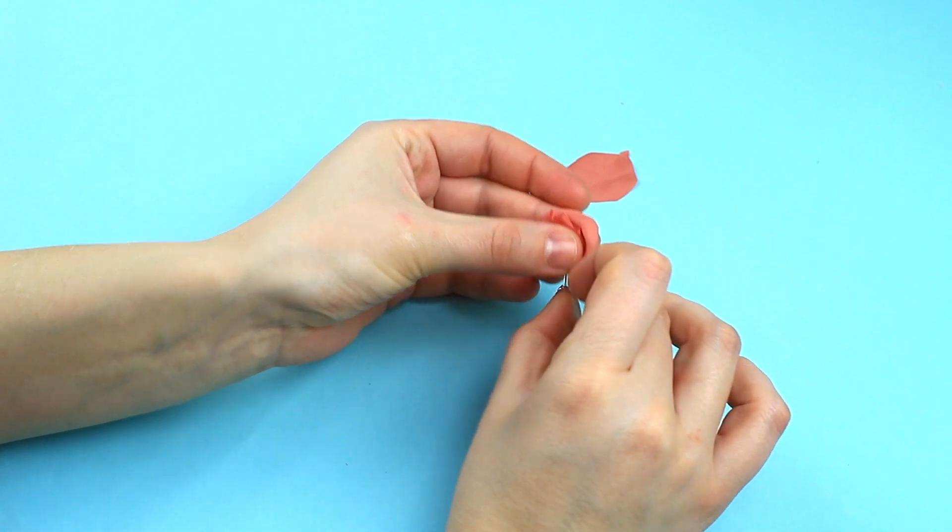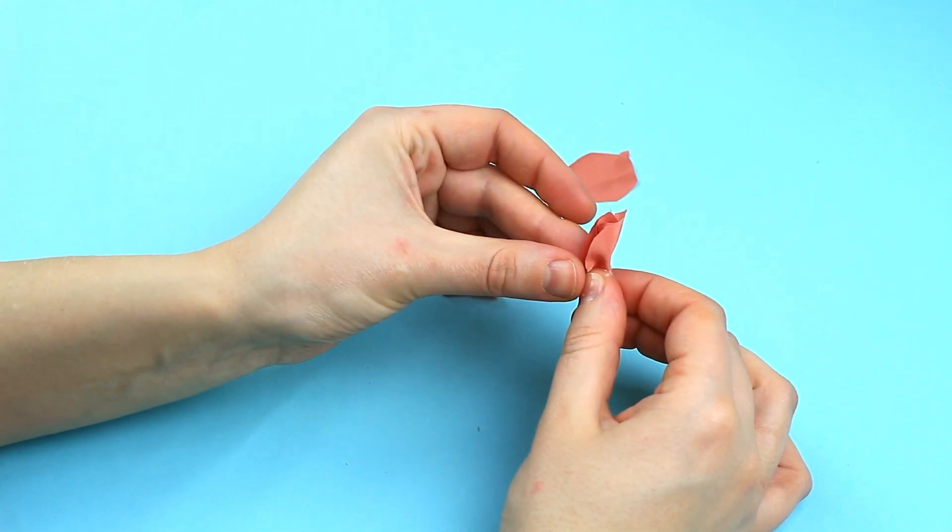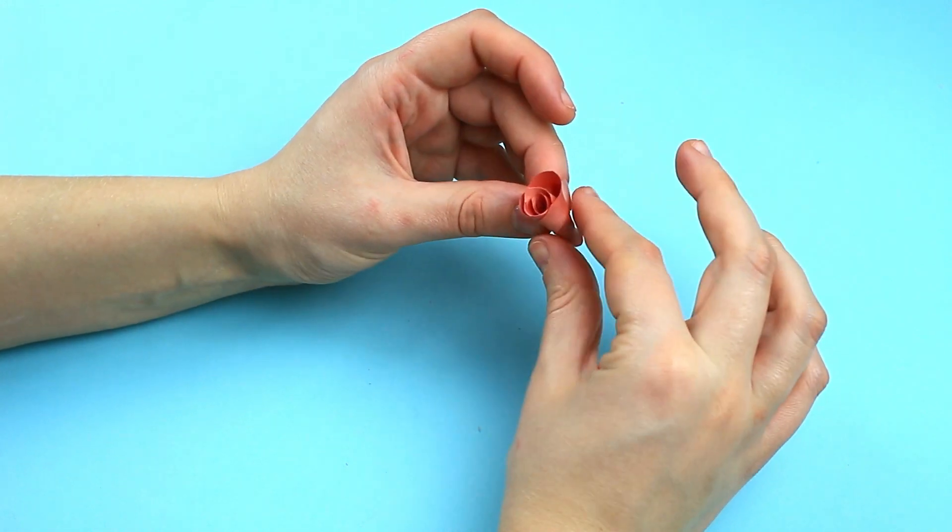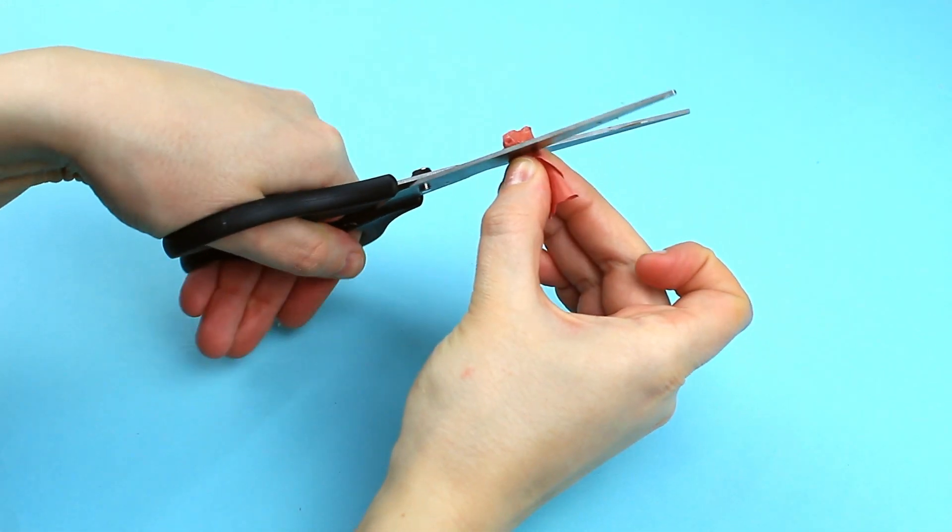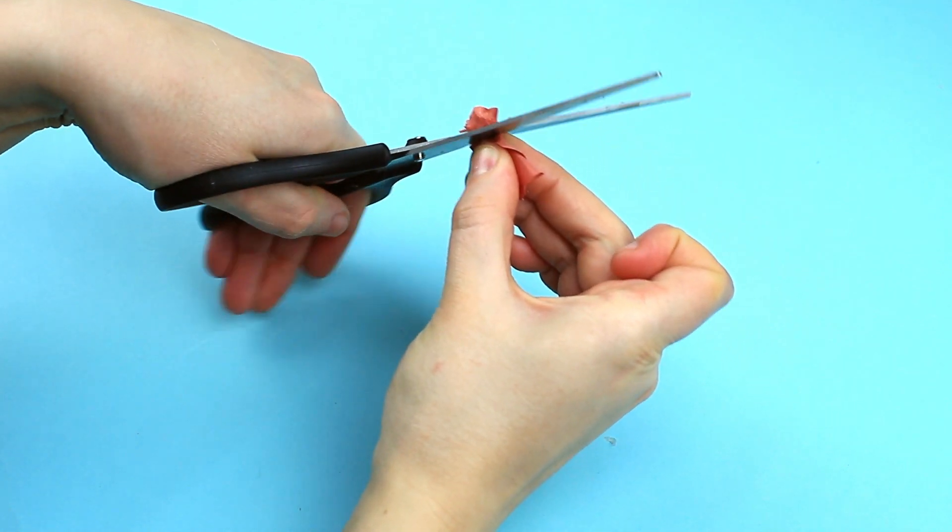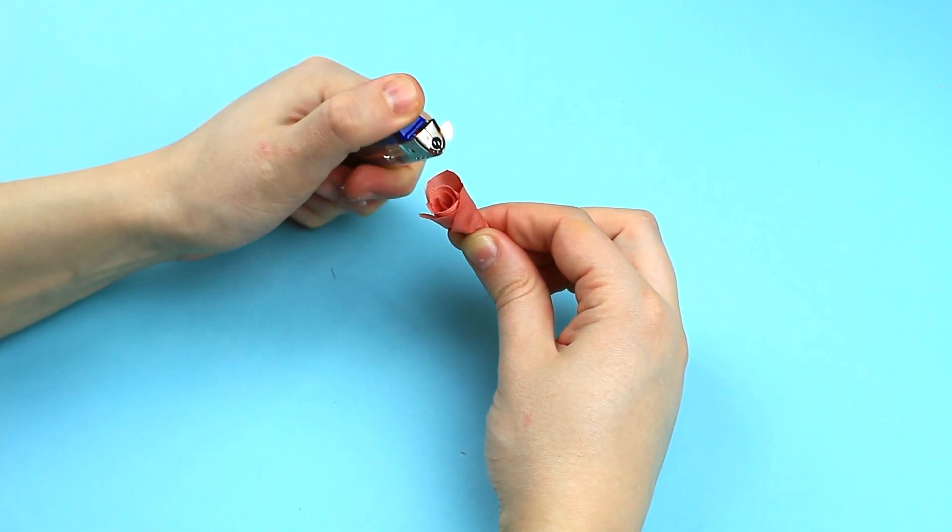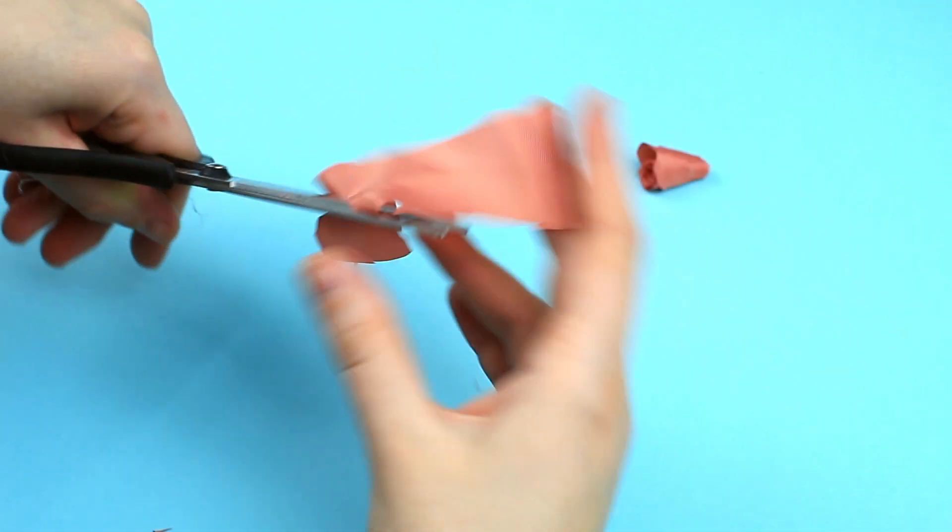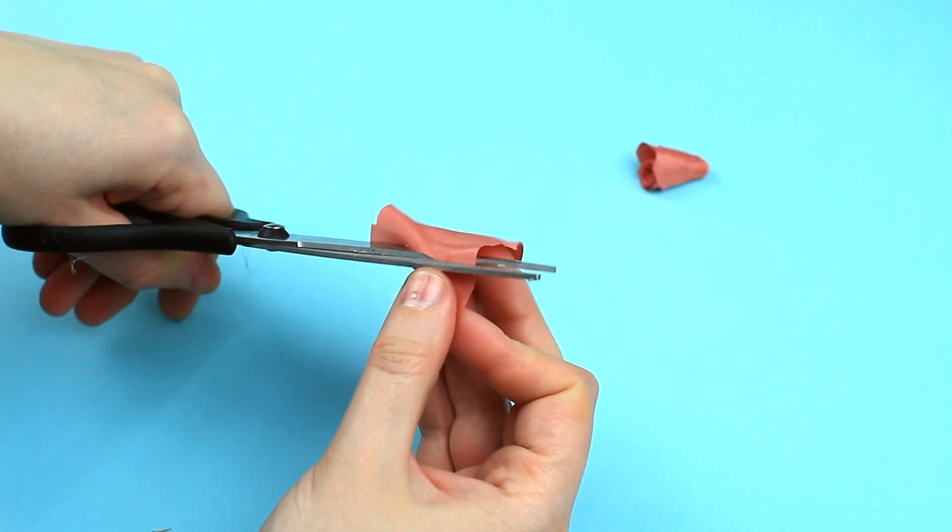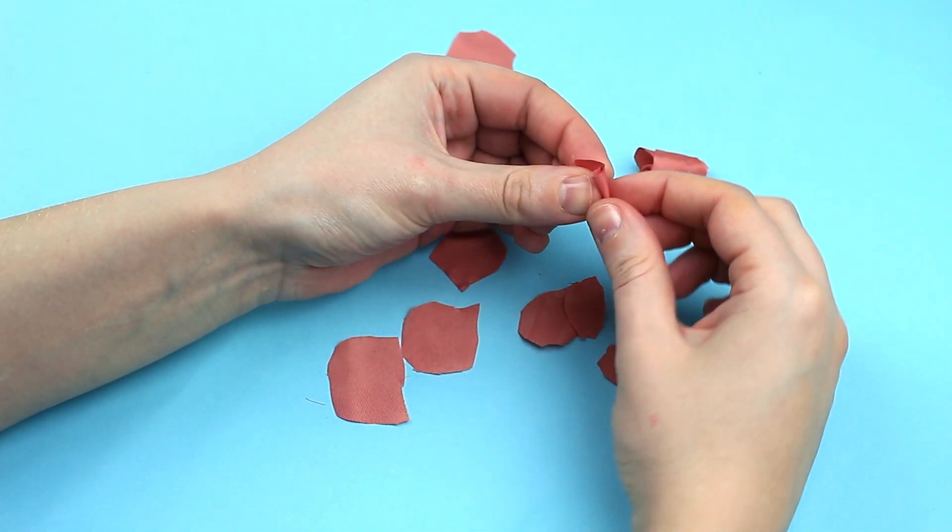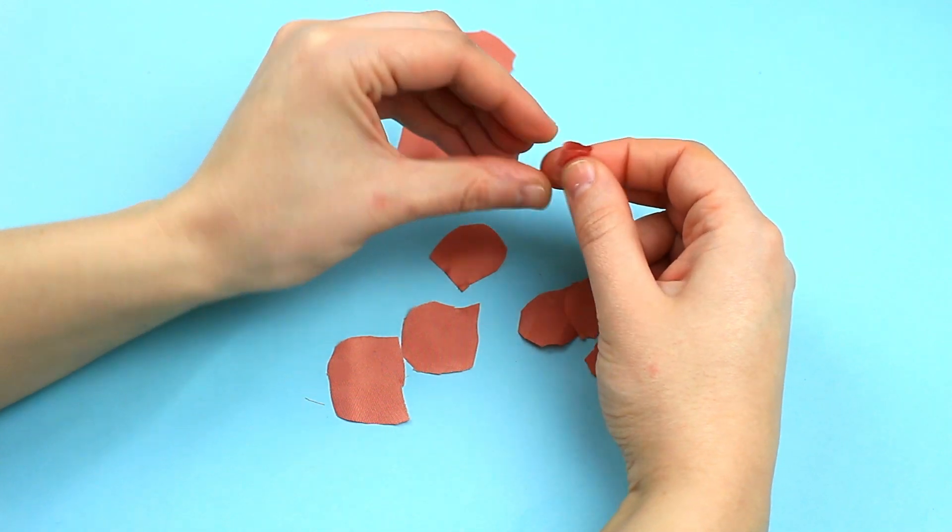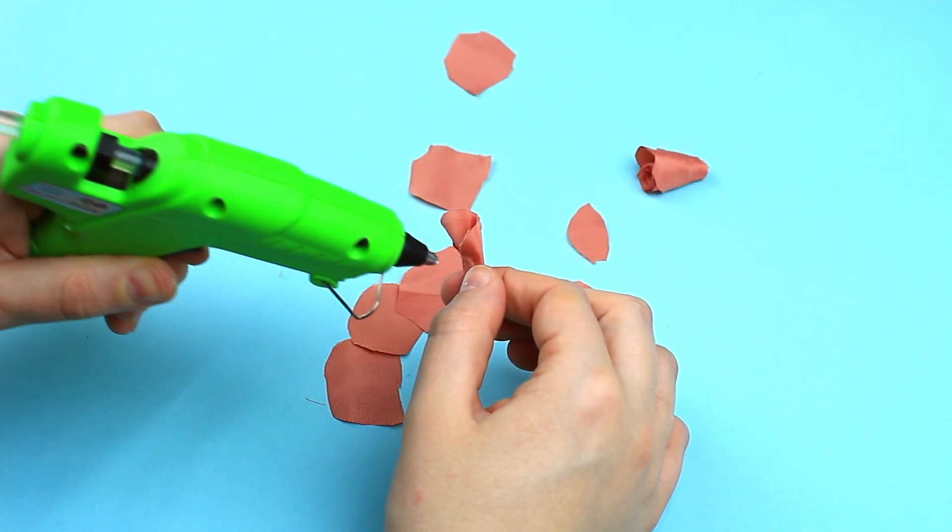Cut off the excess fabric and smooth the flower. Cut out twice as many petals as for the first flower. Follow the same steps while making another rose. Make the flowers different.